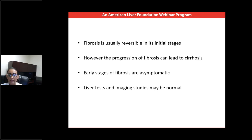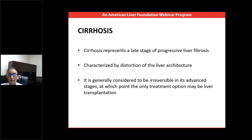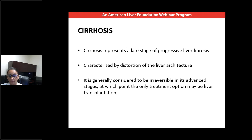Even labs and imaging studies may be completely normal despite the presence of some scar tissue in the liver. However, if we do a liver biopsy, we can detect early stages of fibrosis. Cirrhosis represents a late stage of progressive liver fibrosis, characterized by distortion of the liver architecture. It's generally considered to be irreversible in its advanced stages, and at some point the only treatment option will be liver transplant.